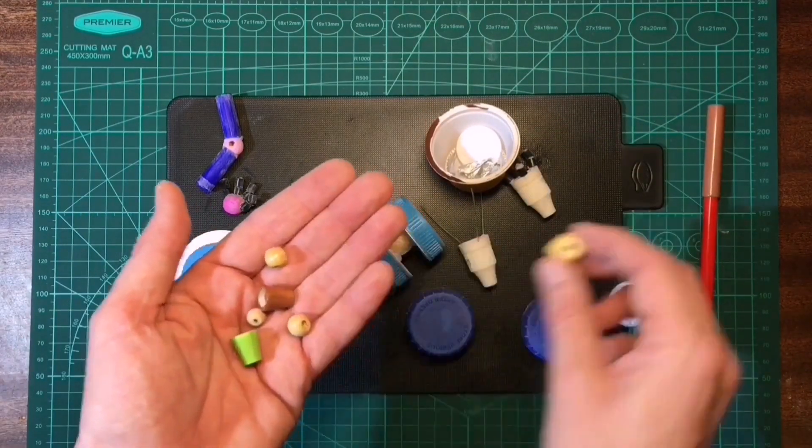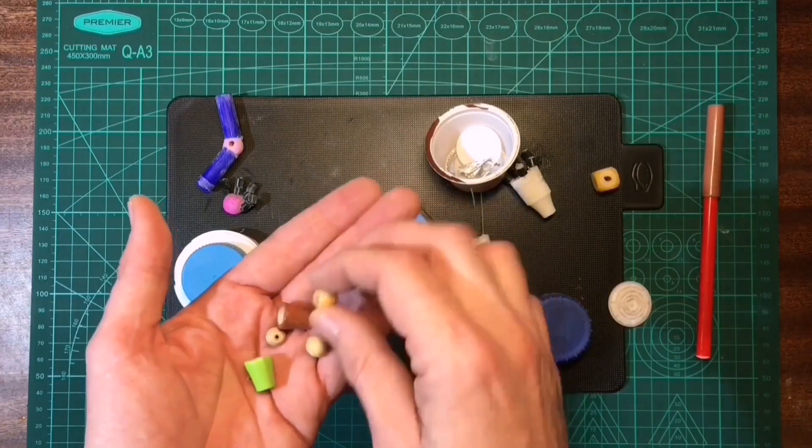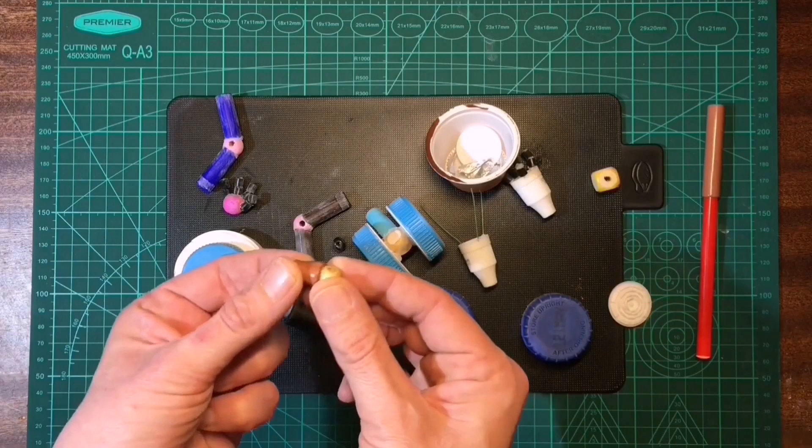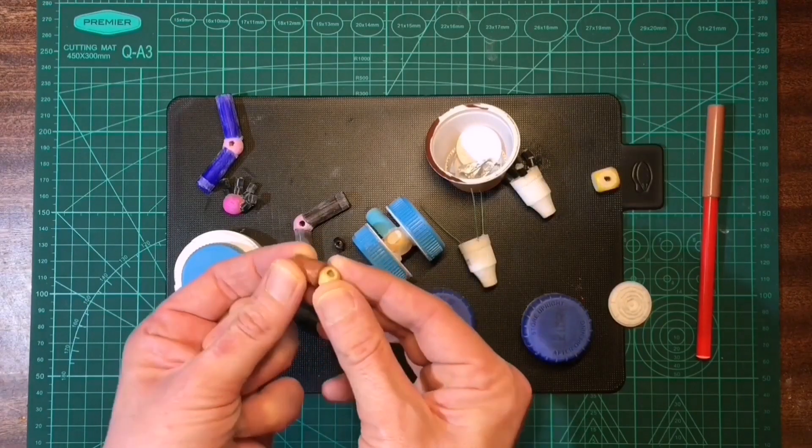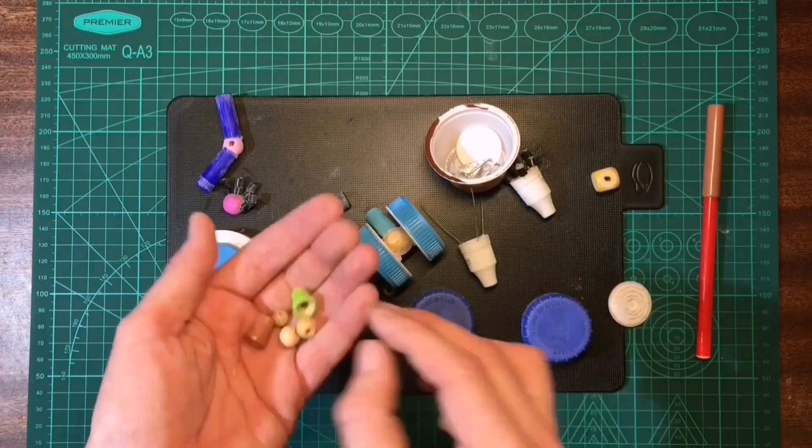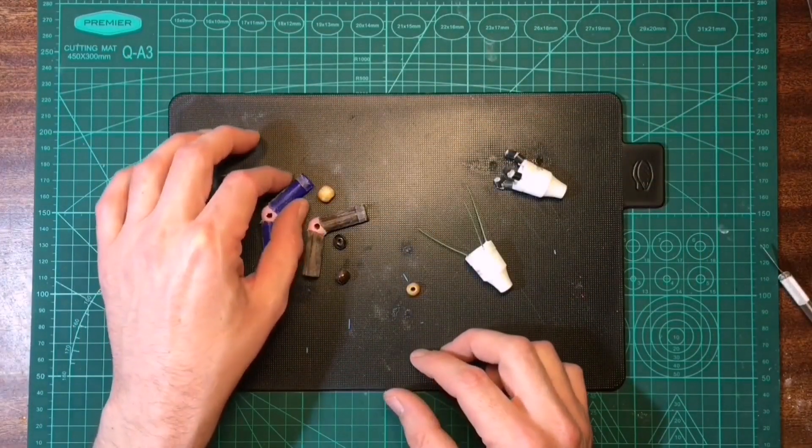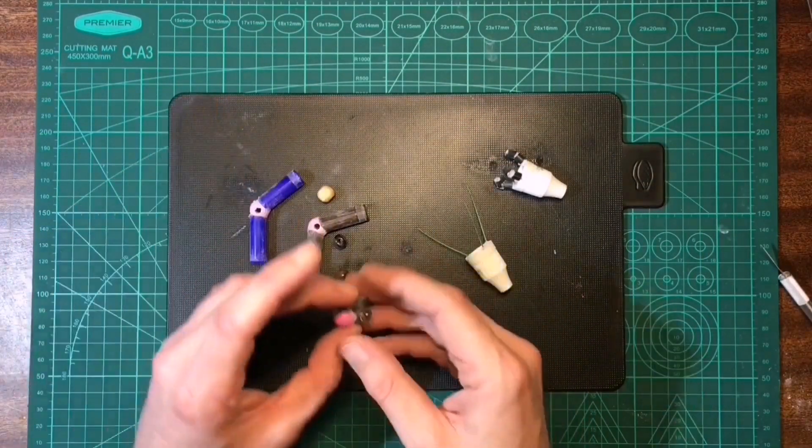And then for his arms yeah, the beads. I've just took some of these bigger beads and kind of countersunk them with my drill bit, making a bit like a ball and socket joint. And it means I can wire it all together and I'll still have some movement in the arms.